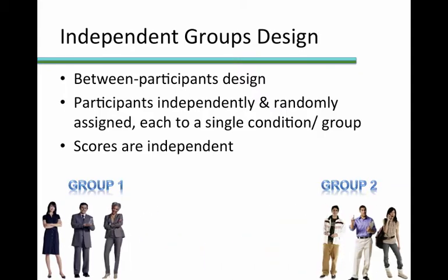The independent and random nature of assignment to groups gives us the best shot at having groups of participants that are equivalent to each other. If we picked and chose which participants went into each group, we may unknowingly apply some sorting criteria that may end up making the groups different from each other. For example, if we put all the first responders to the study in one group and everyone else in the second group, we may end up with different characteristics. It could be that the first recruitment flyer went up at a university, so all of the first responders ended up being university students.